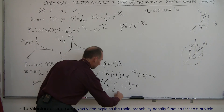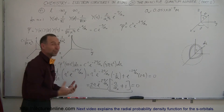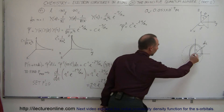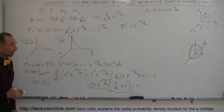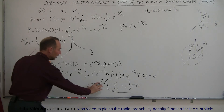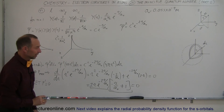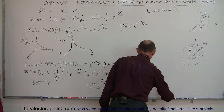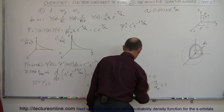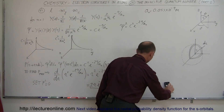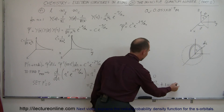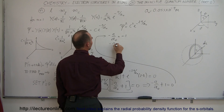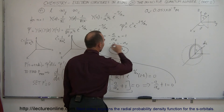That means either the first factor equals zero or the second factor equals zero, because when we multiply two things together and get zero, one or the other must equal zero. If 2r equals zero, then r equals zero — that's not a good solution, that's the minimum probability. We want the maximum, so we ignore that and concentrate on the bracket: minus r over a sub-naught plus 1 equals zero. Moving the 1 across: minus r over a sub-naught equals minus 1. Cross-multiplying: minus r equals minus a sub-naught, or r equals a sub-naught.